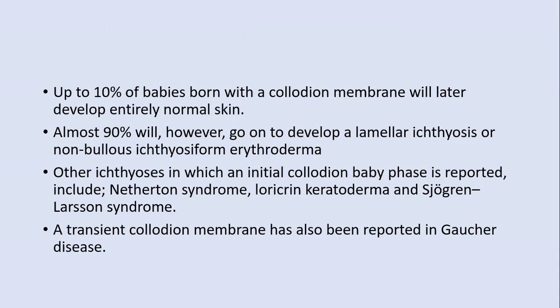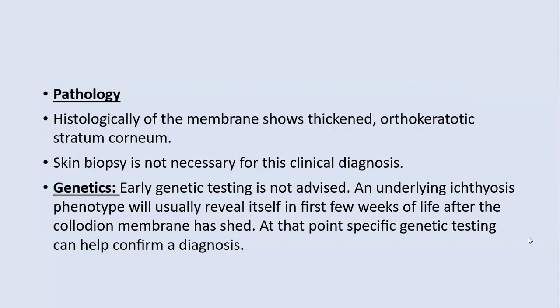However, 90% will go on to develop either lamellar ichthyosis or non-bullous ichthyosiform erythroderma. Other ichthyoses may also develop, including Netherton syndrome, loricrin keratoderma, and Sjögren-Larsson syndrome. A transient collodion membrane is also reported in Gaucher's disease, a metabolic storage disease.